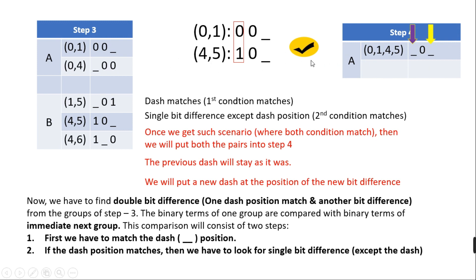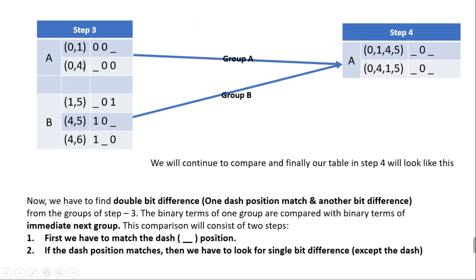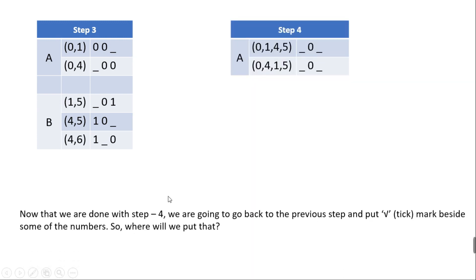Continuing comparisons, Step 4 has two results from groups A and B: the pair match 0,1 and 4,5, and also 0,4 matched with 1,5. Their binary representations look exactly the same — 0,1,4,5 and 0,4,1,5 are the same groups written differently — so they are essentially the same entry in Step 4.